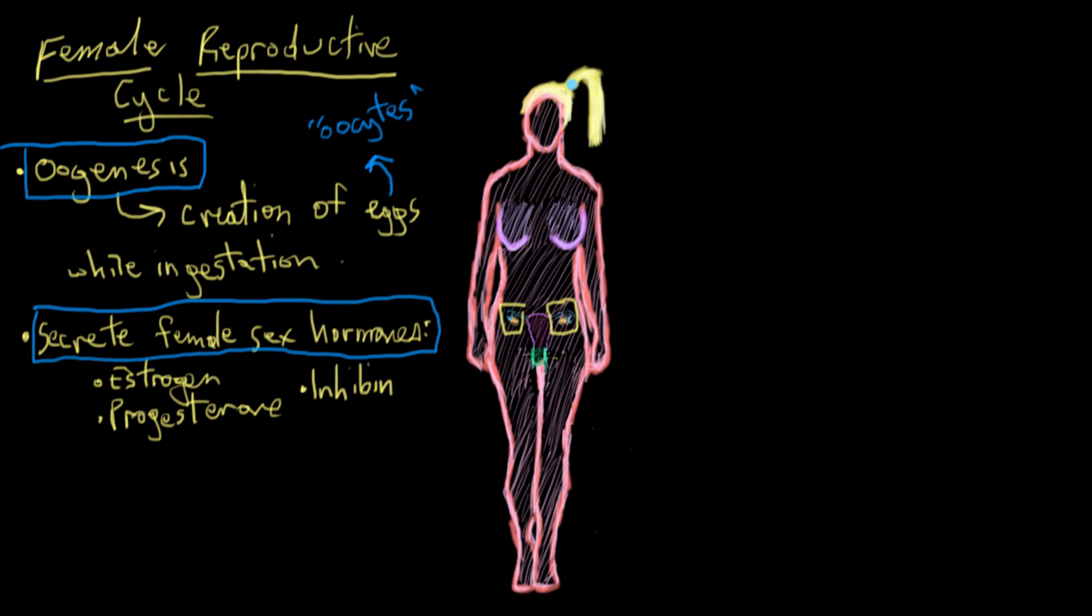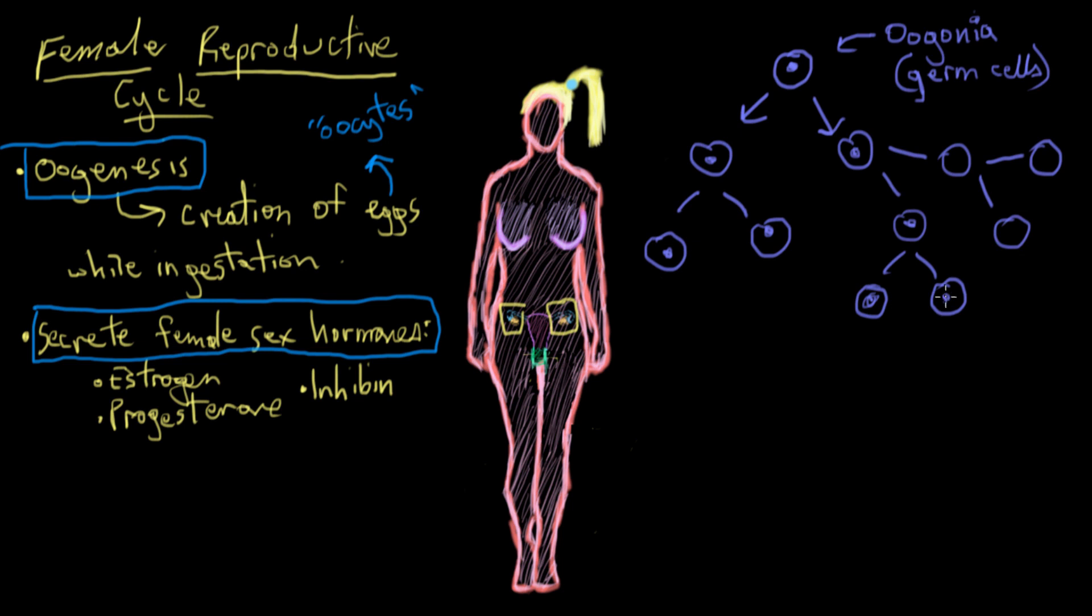Let's first discuss how the eggs are made in the ovary in the first place. Early in uterine development, precursor germ cells, which are called oogonia, and those are homologous to spermatogonia in males, these oogonia undergo a ton of mitotic divisions to make more of themselves.